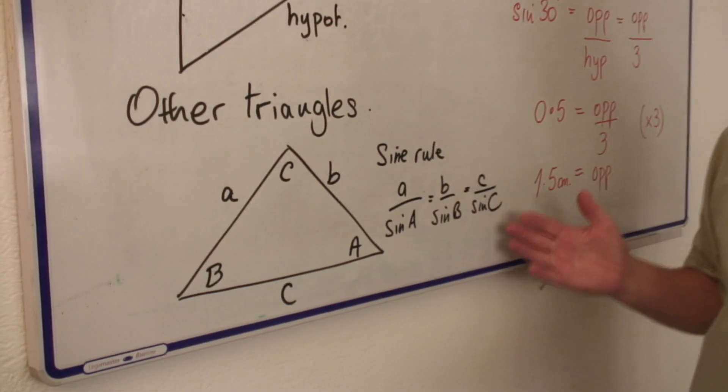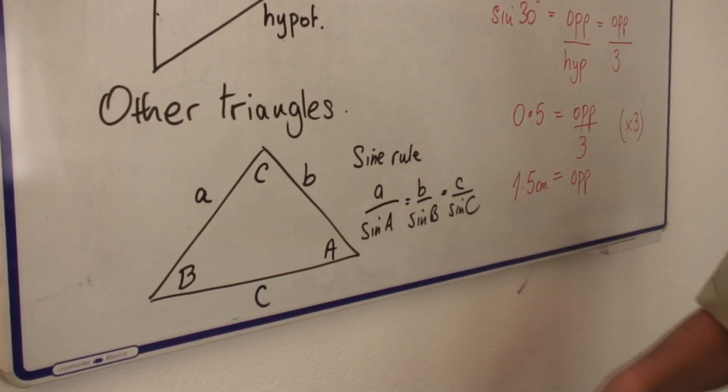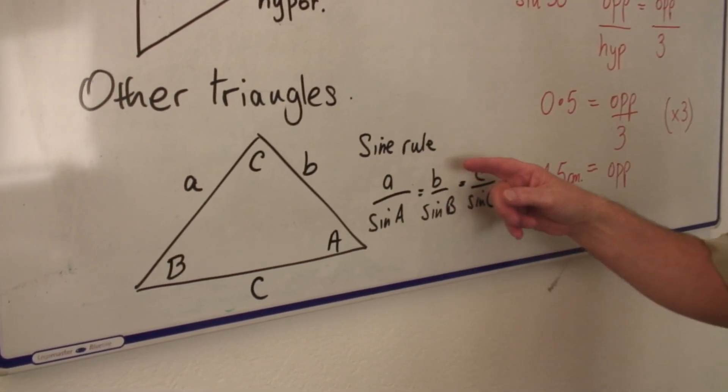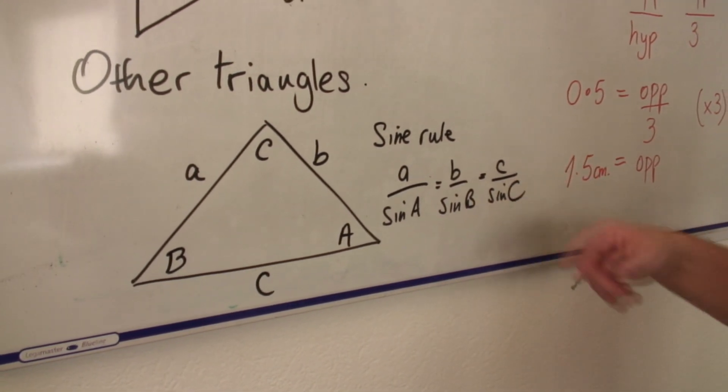Now we have a rule for this. And it's called the sine rule: a over sine A is equal to b over sine B equals c over sine C.